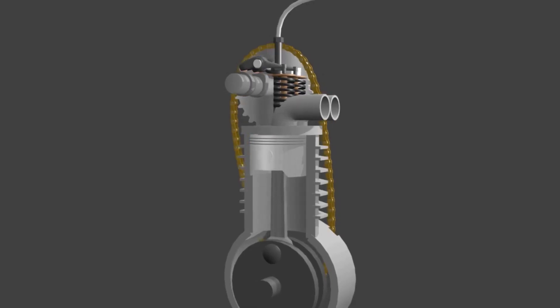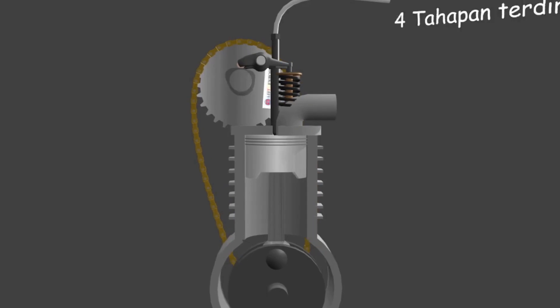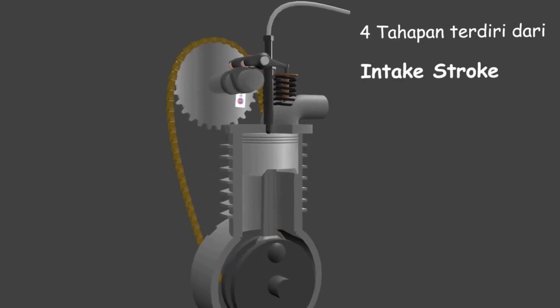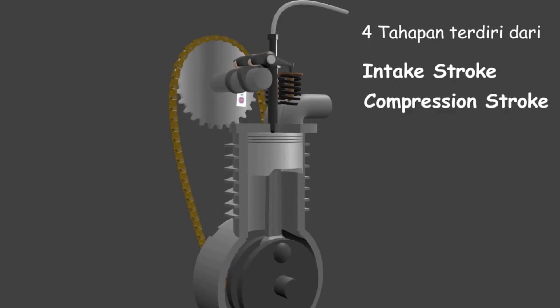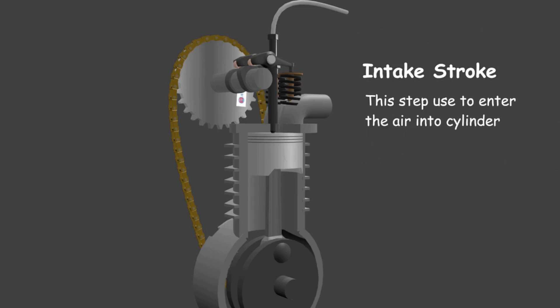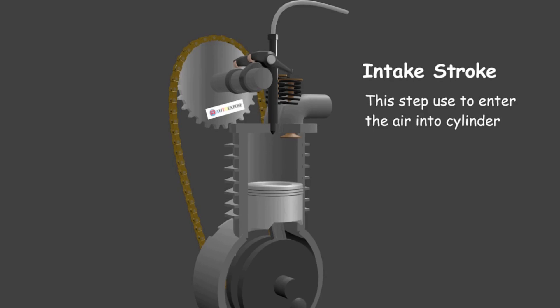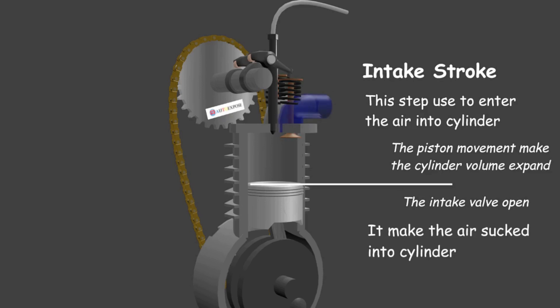Diesel engine has four steps just like gasoline engine: intake stroke, compression stroke, combustion stroke, and exhaust stroke. Intake stroke serves to enter air into the cylinder. When the piston moves downward, the cylinder volume expands and the intake valve opens. This cylinder expansion will suck air from the intake manifold.